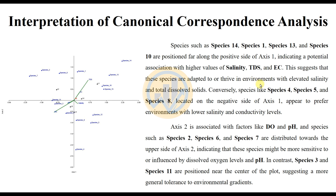Axis 2 is associated with factors like dissolved oxygen (DO) and pH. Species such as species 2, species 6, and species 7 are distributed toward the upper side of axis 2, indicating those species are more sensitive to or influenced by dissolved oxygen levels and pH. In contrast, species 3 and species 11 are positioned near the center of the plot, suggesting a more general tolerance to environmental gradients.